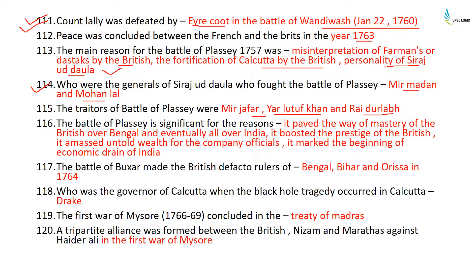The Battle of Plassey is significant for four reasons: first, it paved the way for British mastery over Bengal and eventually all of India; second, it boosted the prestige of the British; third, it amassed untold wealth for company officials; and fourth, it marked the beginning of the economic drain of India. The Battle of Buxar made the British de facto rulers of Bengal, Bihar, and Orissa in 1764. The governor of Calcutta when the Black Hole tragedy occurred was Drake.